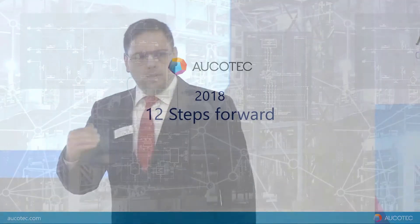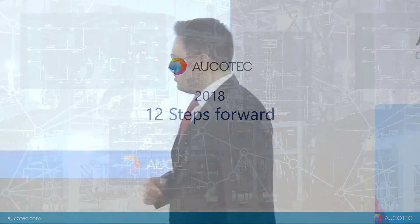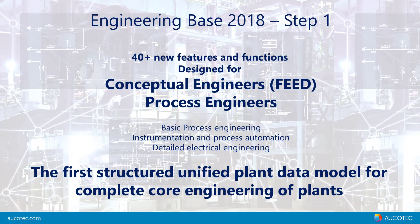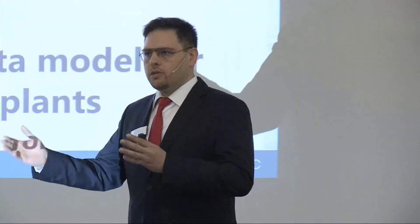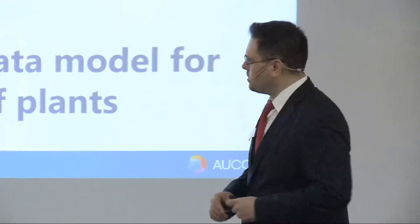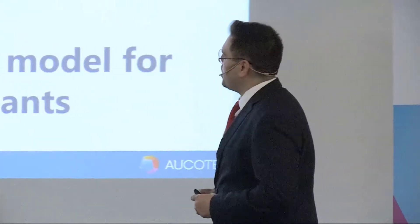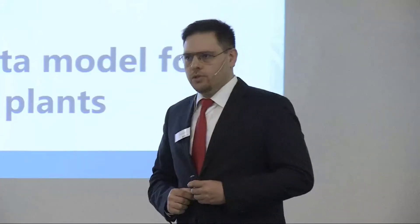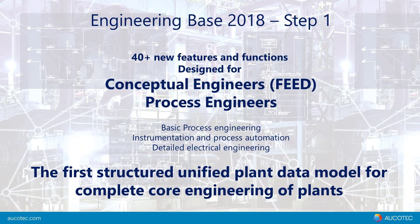We took 12 steps forward in the last two years towards modern plant engineering. The first step is that we created more than 40 new features targeting conceptual designers and process engineers — all state-of-the-art features and functionalities that process engineers need to design the plant. This is what we are releasing in EB 2018, covering the complete disciplines involved in core engineering, making this the first structured unified plant data model for complete core engineering of plant design.